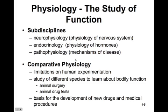Comparative physiology examines physiological processes in humans and compares them to other animals. We often do this because there are limitations on human experimentation — we can't just cut people open and examine the processes. So we study different species to learn about all the different bodily functions. We do a lot of drug testing and experimental surgeries, and this is the basis for developing new drugs and medical procedures.